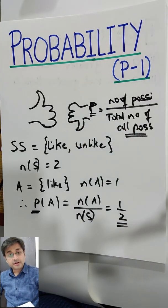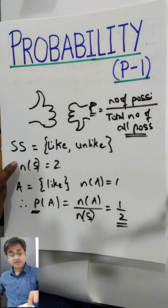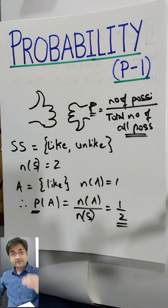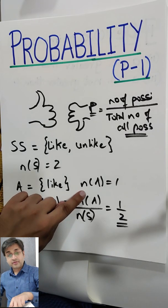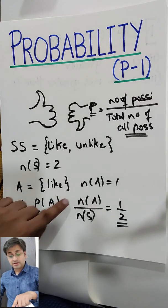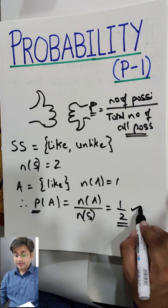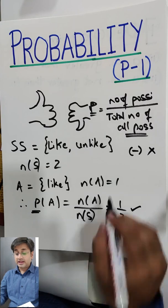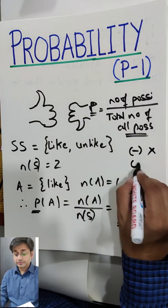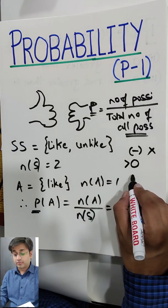Are we clear with probability now? So, whenever an event is given, first find out all possible outcomes — that is called sample. Then find out the number of samples. Then find all possibilities of the event they are asking for. And finally, number of events and probability, which will be number of events upon sample. Two things you need to remember: probability value can never be negative. It can never be less than 0, and it can never be greater than 1.